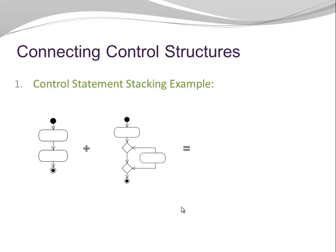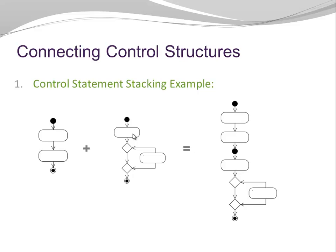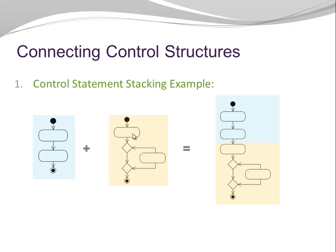It is easiest to visualize when you think of your control statement in the form of the activity diagram representing it. We can connect the entry point of one activity diagram to the exit point of another. Here I have a sequence statement and a selection statement, and I would like to combine those two by stacking them. Notice how I connected the entry point of my selection statement to the exit point of my sequence statement. You can see the sequence statement in blue, the selection statement in red, and there is an overlapping area where the entry point and the exit point overlap. This overlap is not needed in a diagram, so we remove it, and the result of my stacking looks like this.